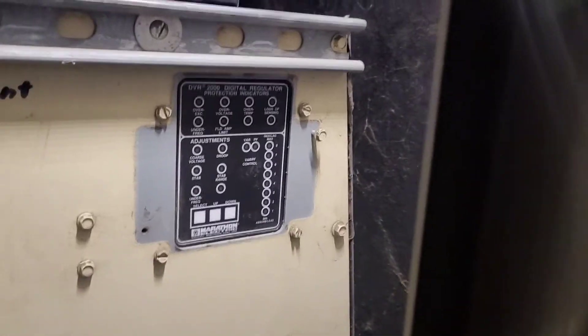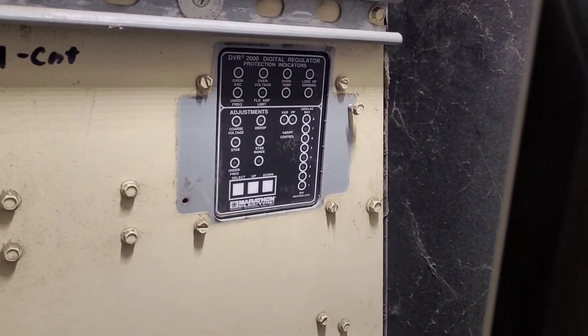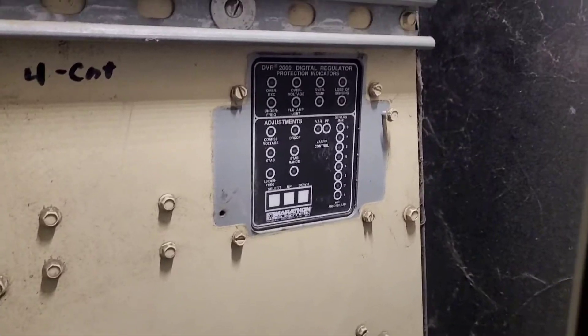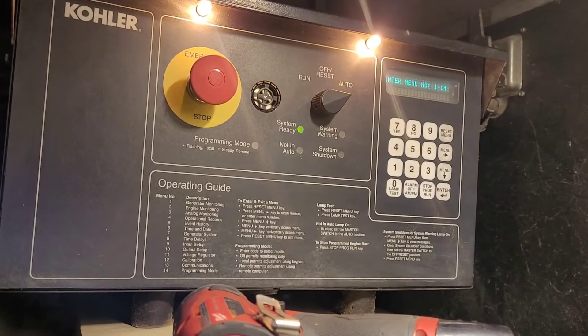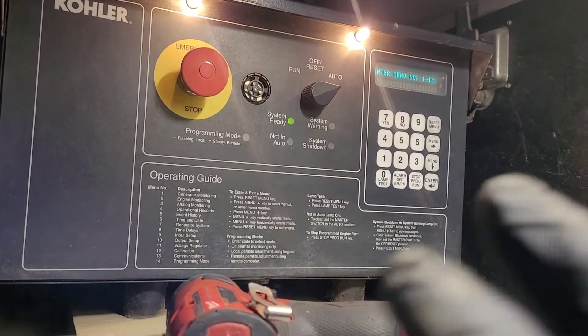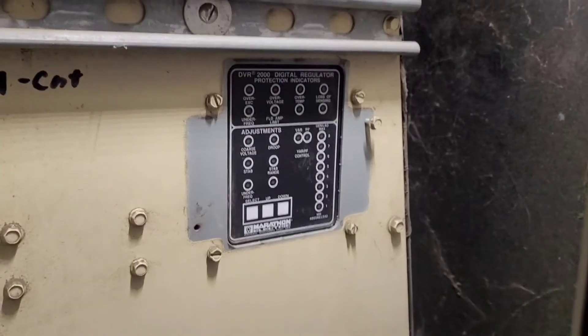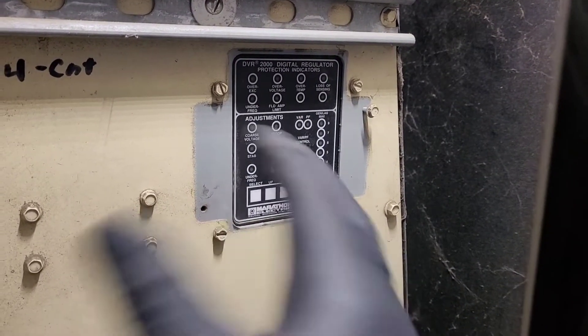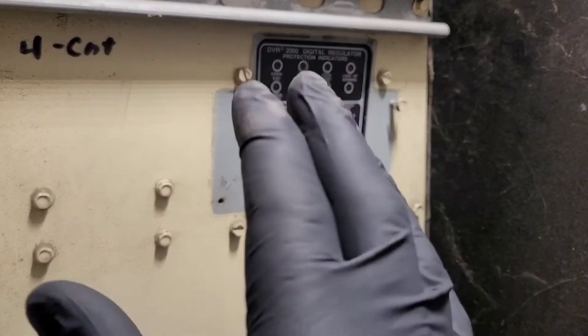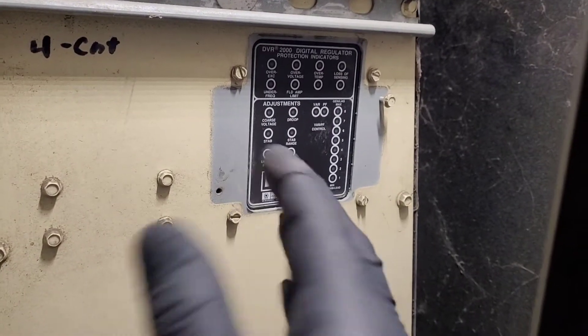So this will basically, this is the control panel for the actual digital voltage regulator. The 550 can vary the voltage a little bit, but this does all the heavy lifting and does all the adjustments to the frequency and you know all the gain stuff for the voltage regulator, hence the name digital voltage regulator.